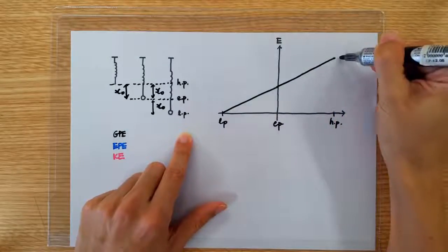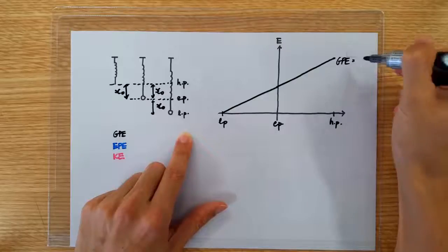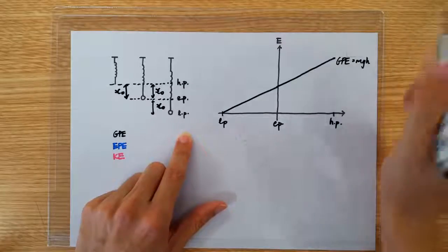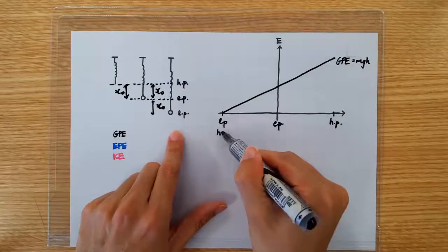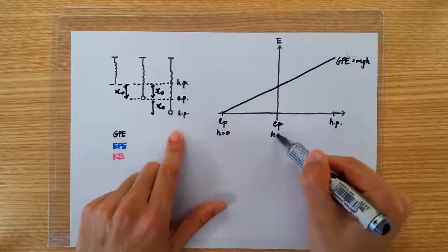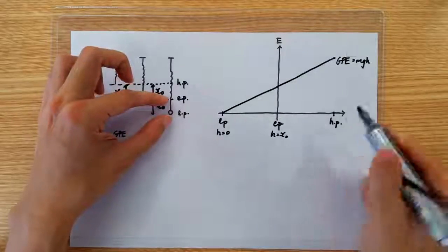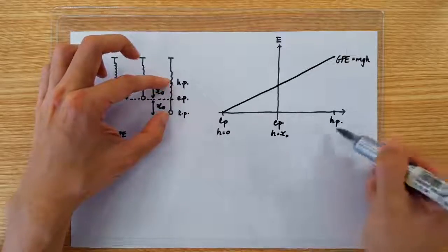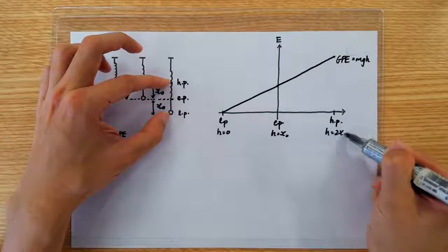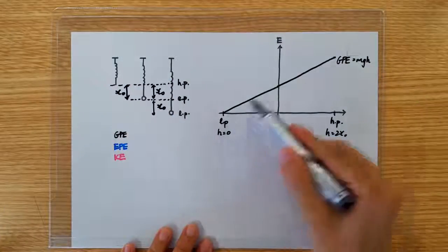It's a straight line because GPE is MGH. At the lowest point, height is 0. At the equilibrium position, the height is x0. And at the highest position, the height will be 2x0. So MGH varies linearly with distance.